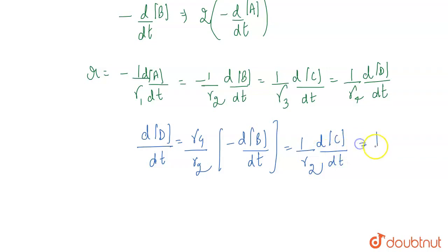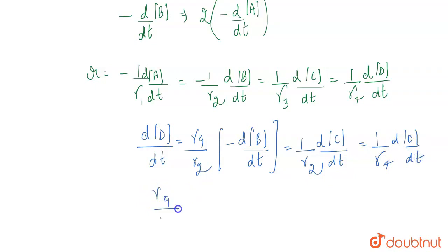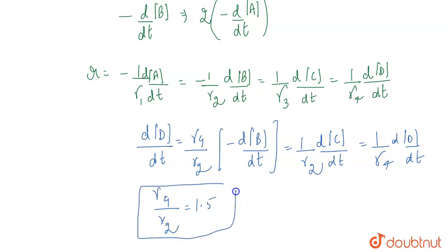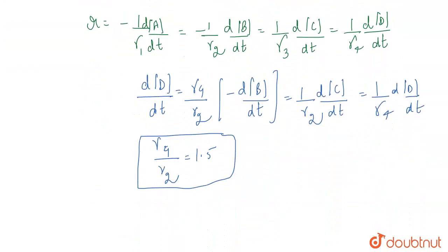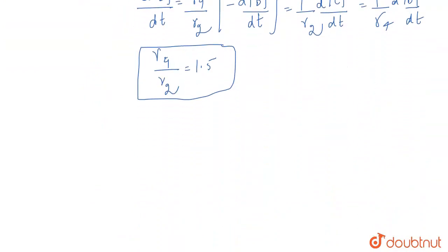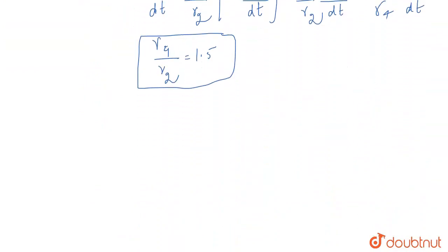For the stoichiometric coefficient γ4, taking dd/dt and solving it, we get γ4 divided by γ2 equals 1.5. So this result will come out to 1.5.